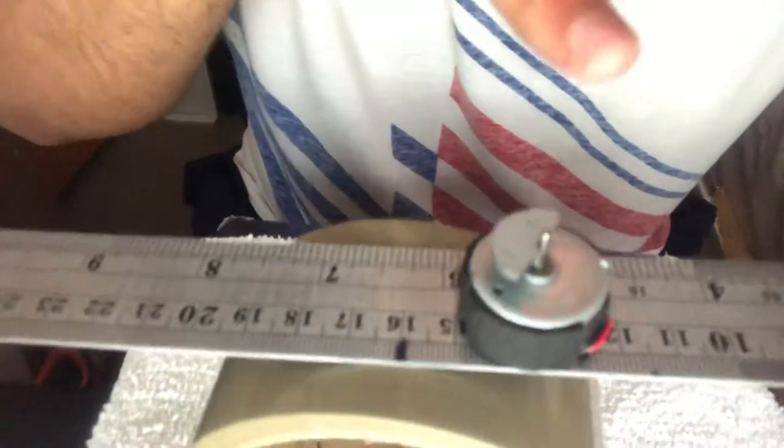First, you're supposed to figure out the distance from the fulcrum to the known item, you write that down. Then measure from the fulcrum to the unknown item and you write that down. And then here's the math.